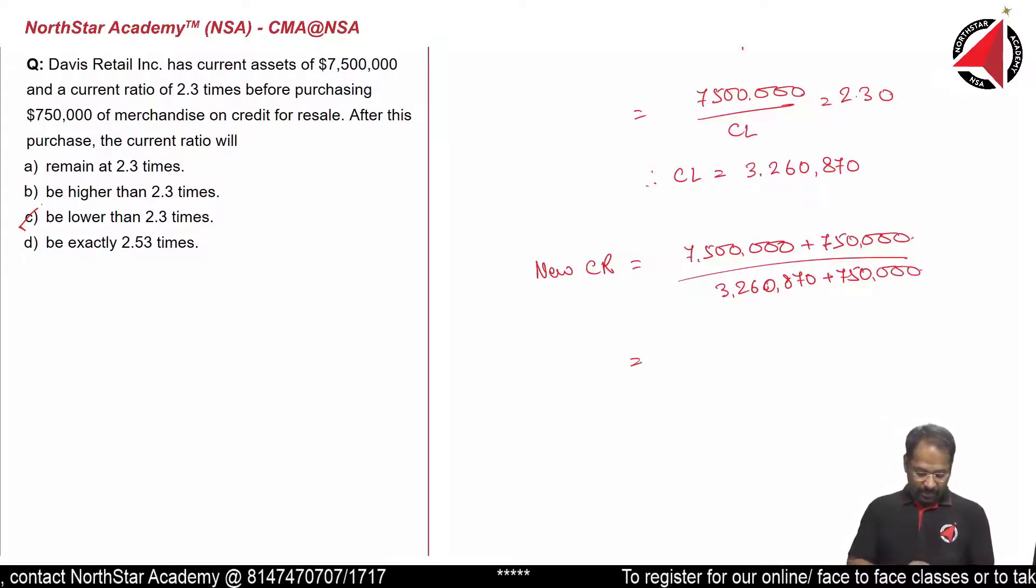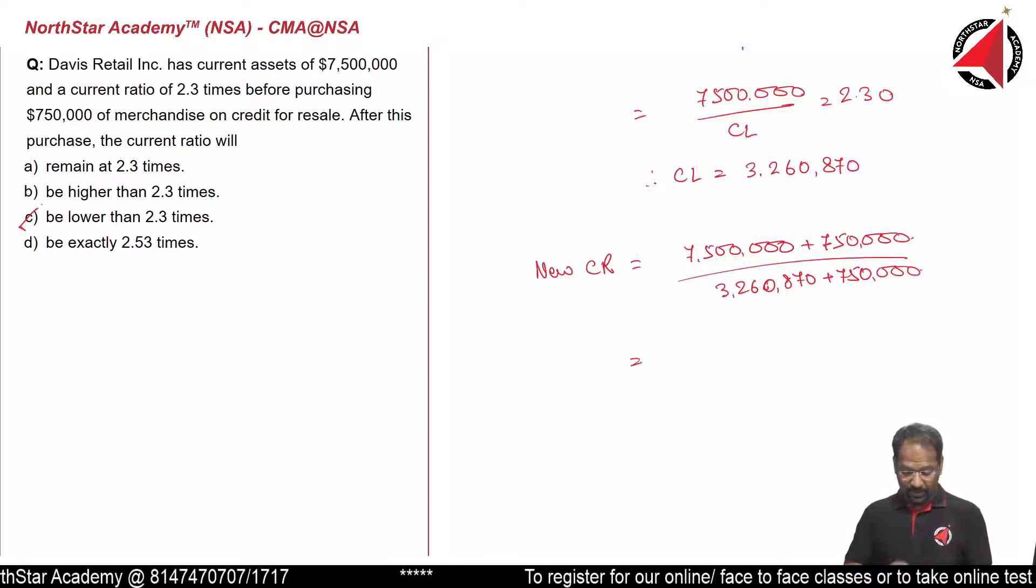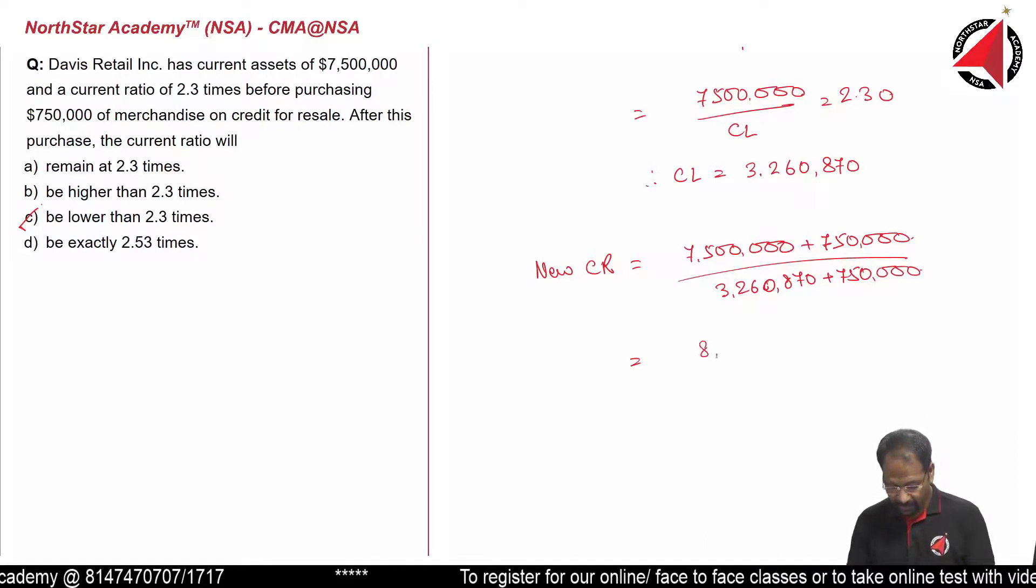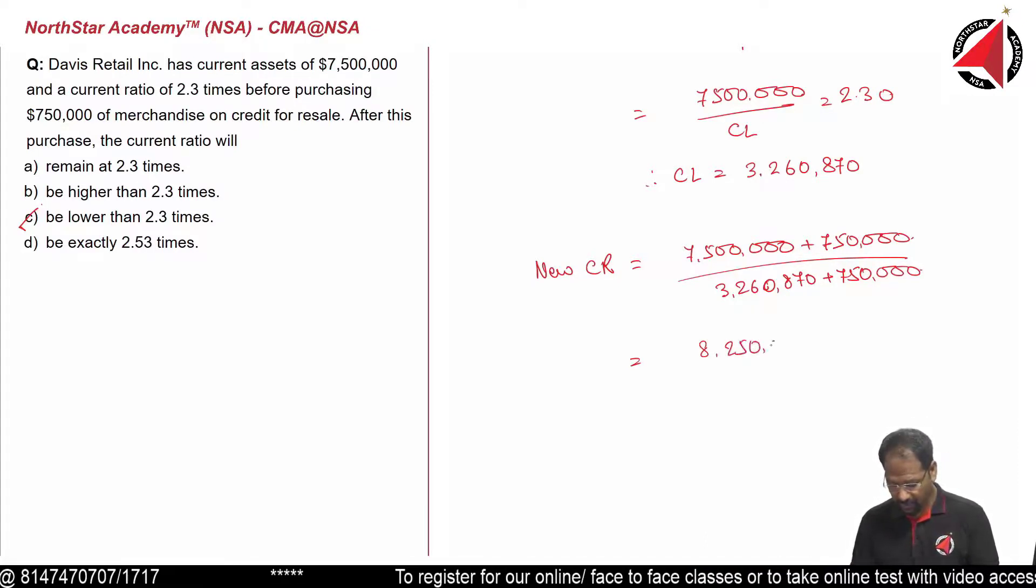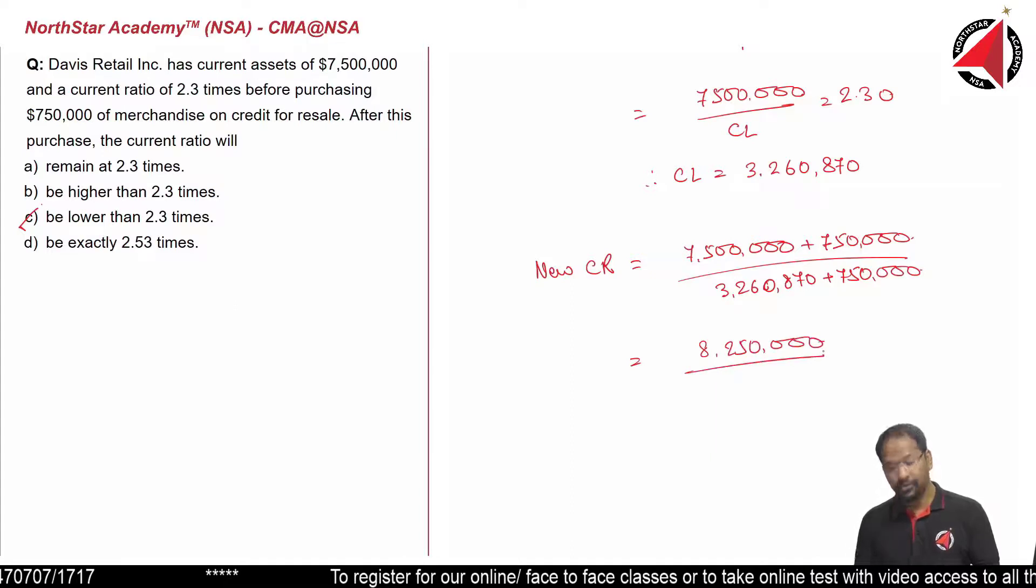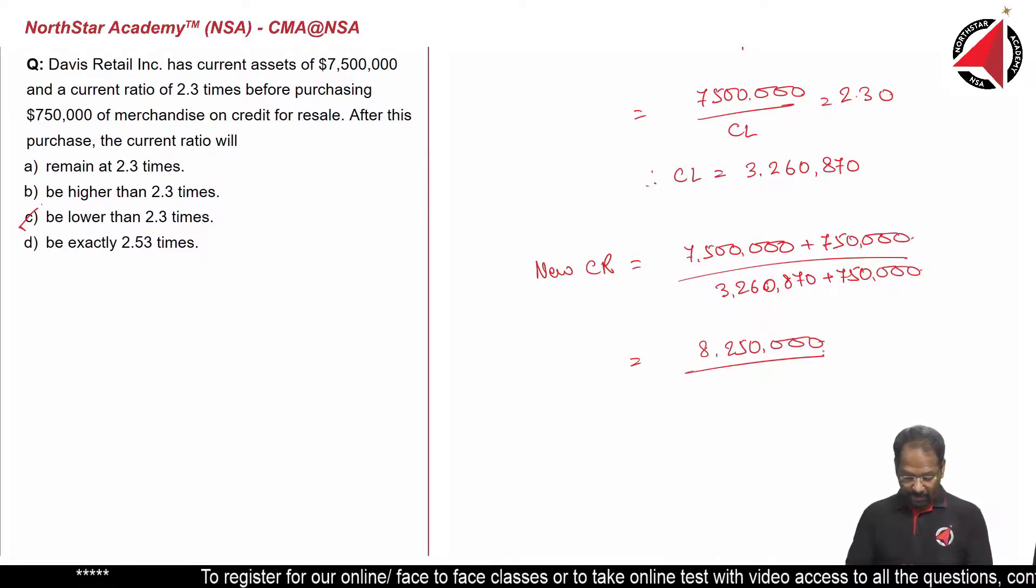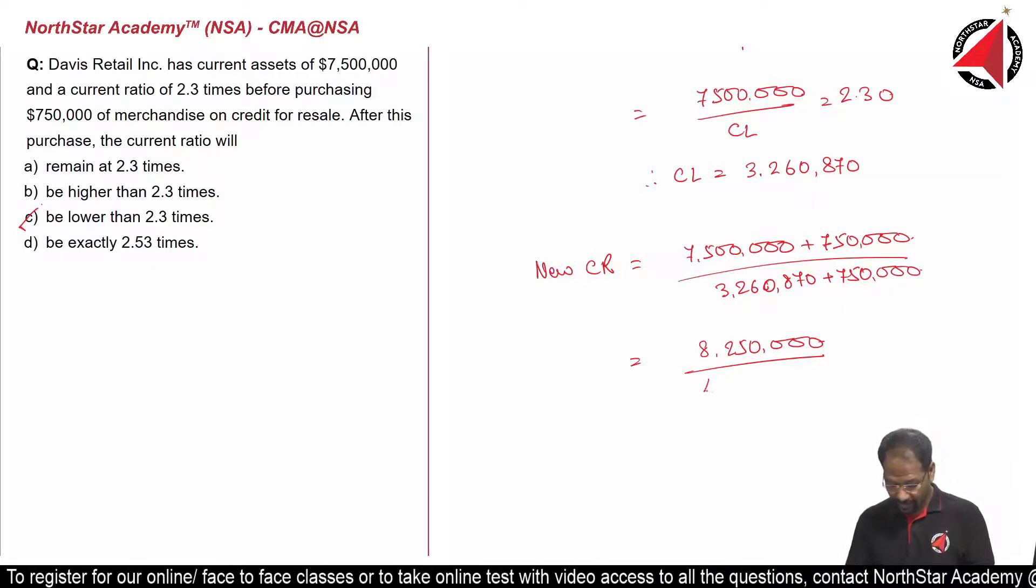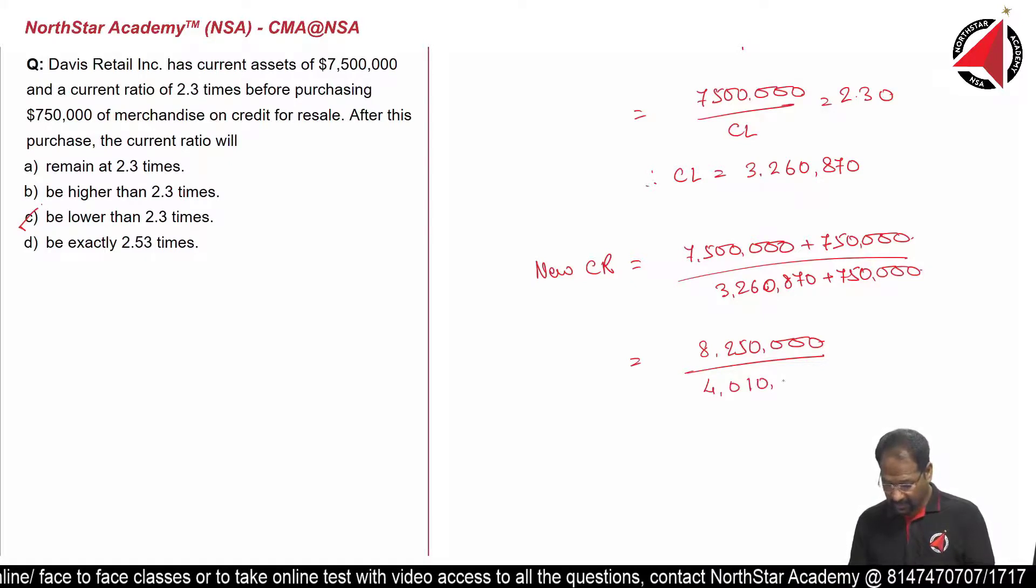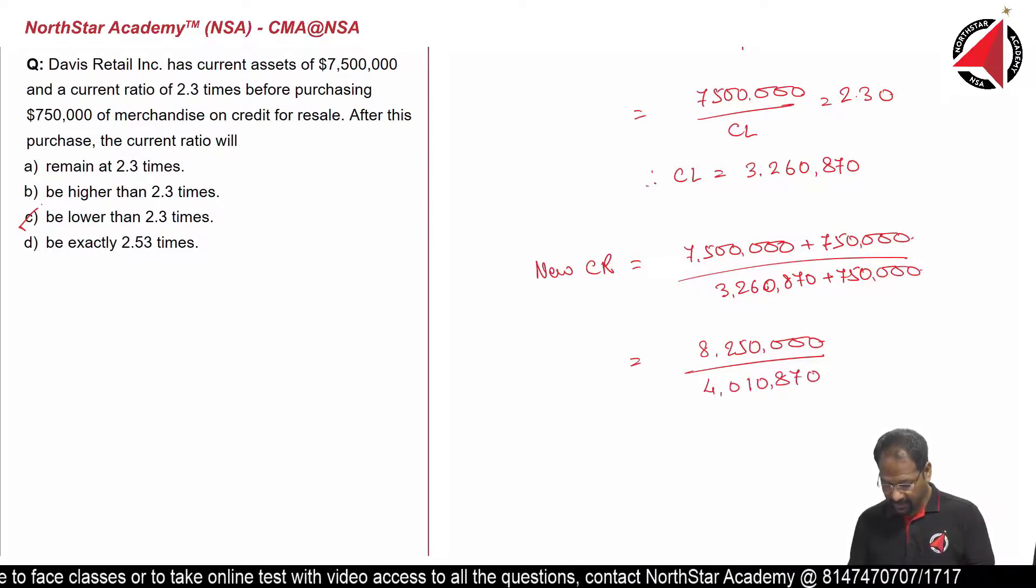Let's calculate. 7.5 million plus 750 thousand, we get 8.25 million or $8,250,000. Similarly on the denominator, 3,260,870 plus 750,000, we get $4,010,870.